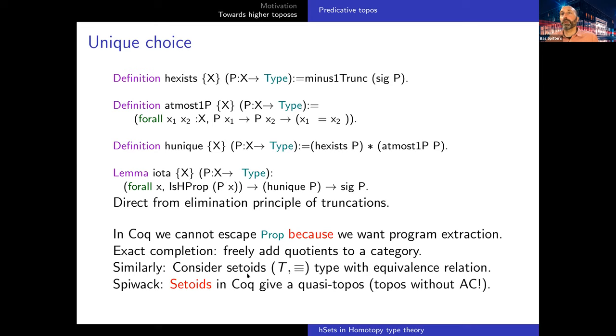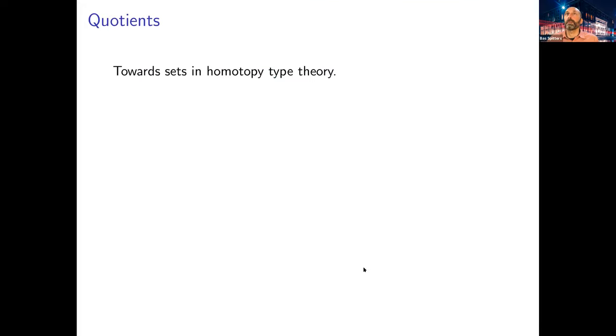What I mentioned before is we have the set quotient construction. This is quite a bit of machinery that we have in Coq because we don't have quotient types. We built, and this is something that can be done for every regular category, we can take the exact completion. So we freely add quotients to a category. And Ivo Spitters showed that set quotients in Coq give you a pre-topos. It looks very much like a topos, but you don't have this unique choice principle.